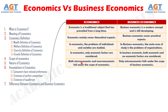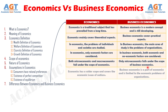Difference five: both microeconomics and macroeconomics fall under the scope of economics. Difference six: economics has a wider scope and covers the economic issues of nations, whereas business economics is a part of economics and is limited to the economic problems of organizations.